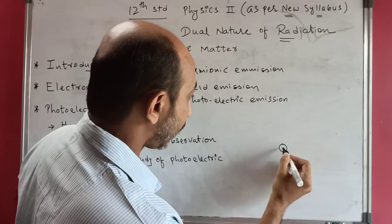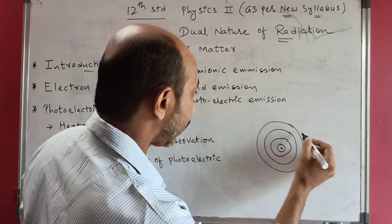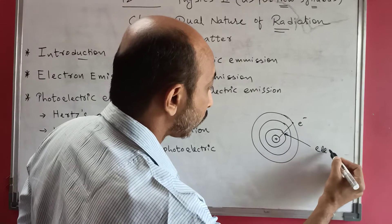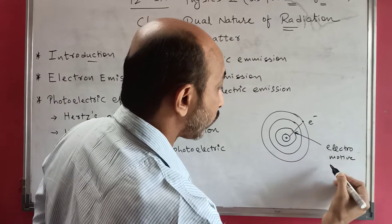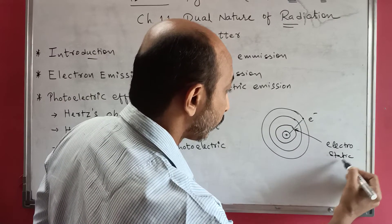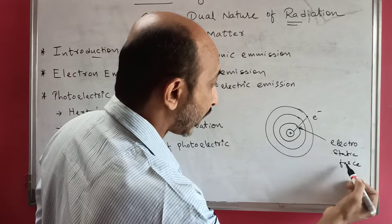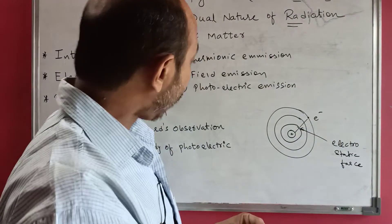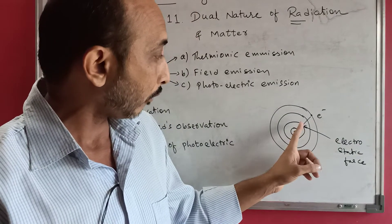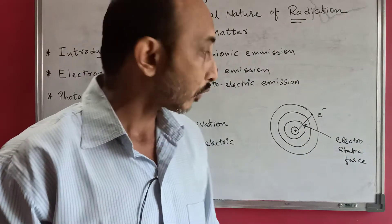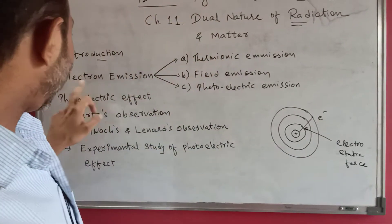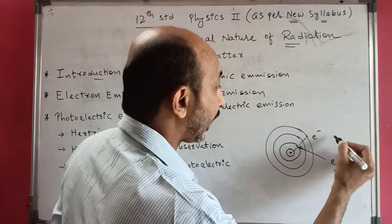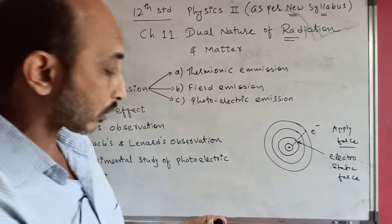In the nucleus — which is positively charged — electrons revolve around it. Electrons are negatively charged and are bound by electrostatic force. The nucleus applies electrostatic force to the electron, which is why the electron revolves around the nucleus. Now, if I want to free this electron from the atom, I have to apply force so that it will break the bond and move out of the metal. That is called emission — electron emission.